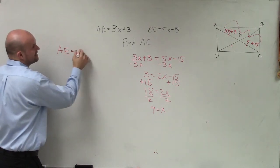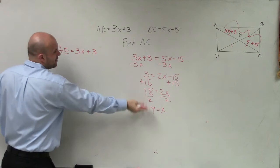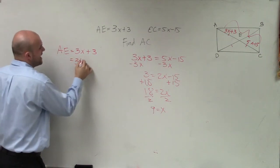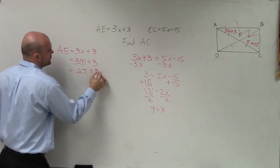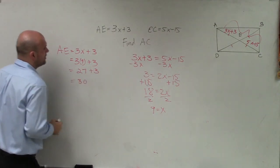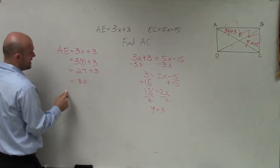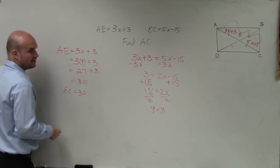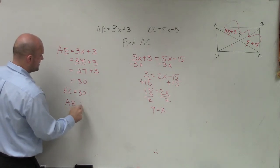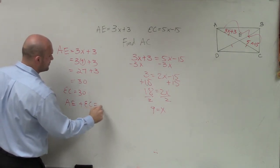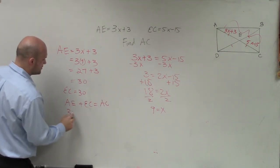AE is equal to 3x plus 3. If I know x is now equal to the value of 9, that's 27 plus 3, which is equal to 30. But if AE is 30, then I know that EC is equal to 30. And therefore, 30 plus 30, so we know that AE plus EC equals AC.